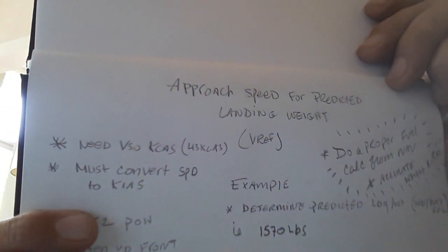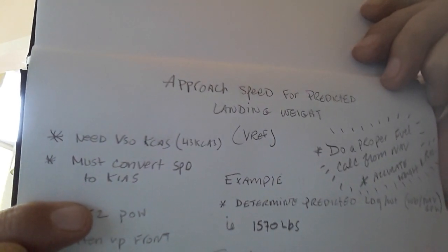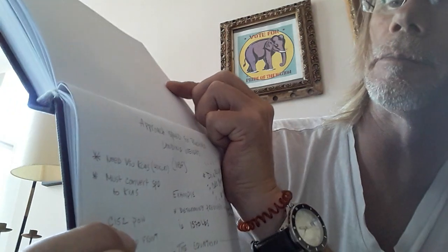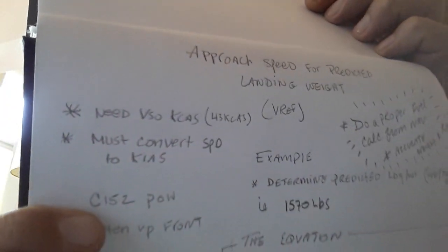Something that people get caught up on is that they want you to do this calculation using calibrated airspeed — specifically the calibrated stall speed. You find this at the very beginning of the C152 Pilot Operating Handbook. On the first page you'll see stall speed, power off, maximum flaps — and in this case it's 43 knots. So you need VSO as a calibrated airspeed.